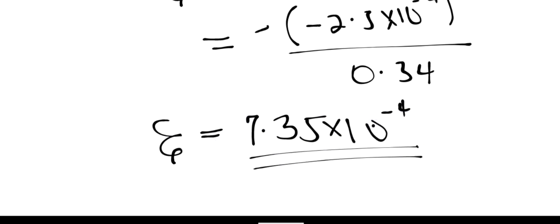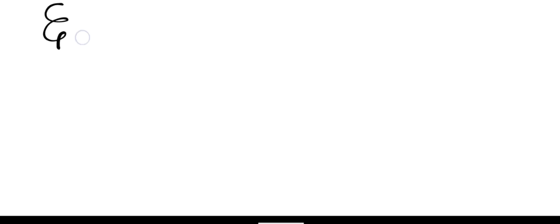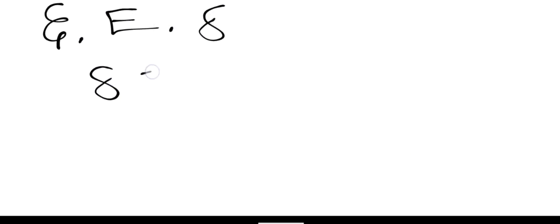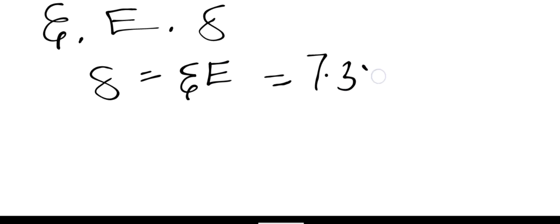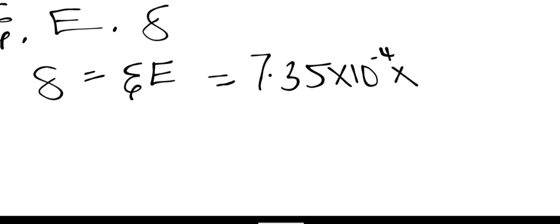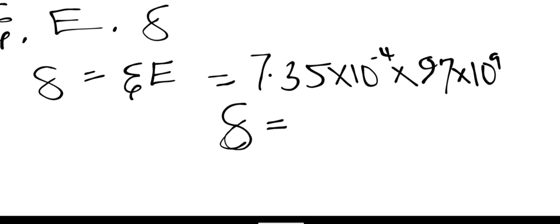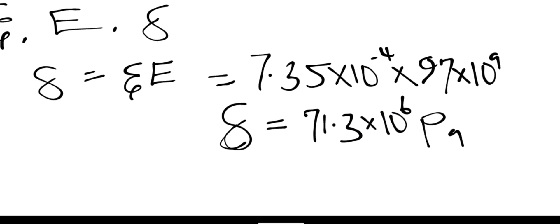Now I have the linear strain, and I also have the Young's modulus, so I can find the stress. Stress = strain × Young's modulus = 7.35 × 10⁻⁴ × 97 × 10⁹ Pa (since 97 gigapascals). Therefore stress = 71.3 × 10⁶ Pa, and since 10⁶ is mega, stress = 71.3 MPa.